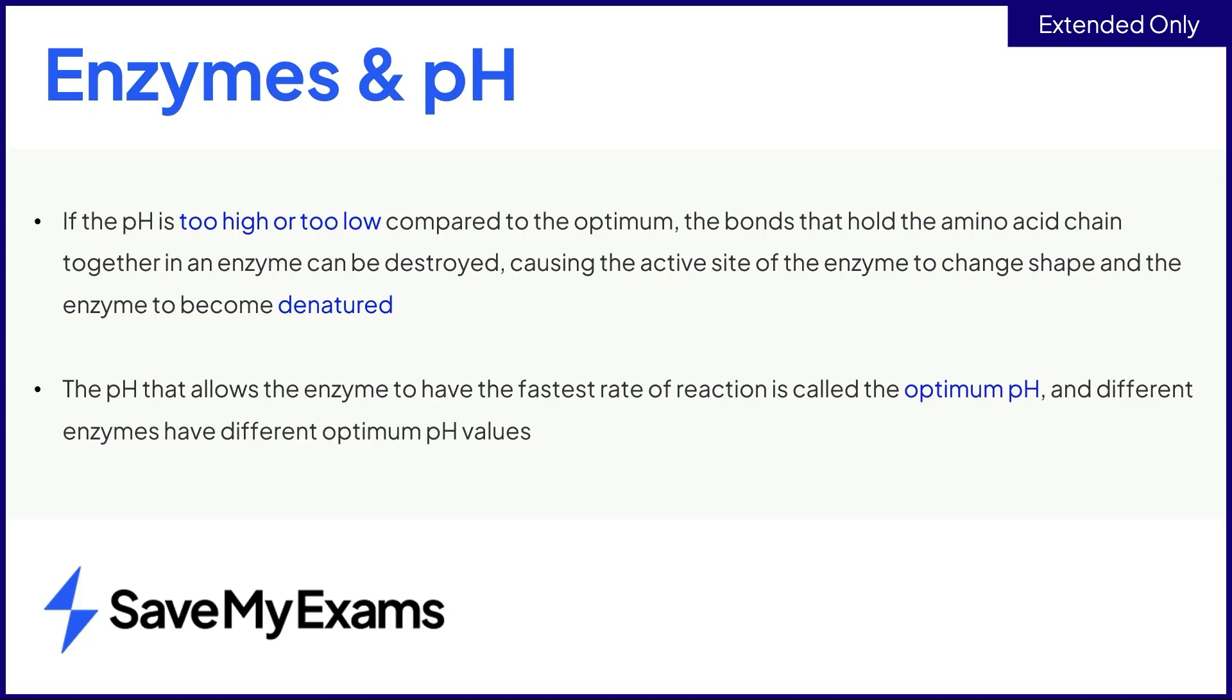The pH that allows the enzyme to have the fastest rate of reaction is called the optimum pH, and this varies for different types of enzyme.